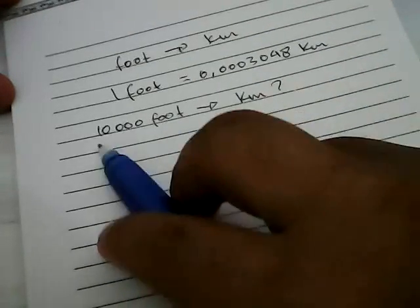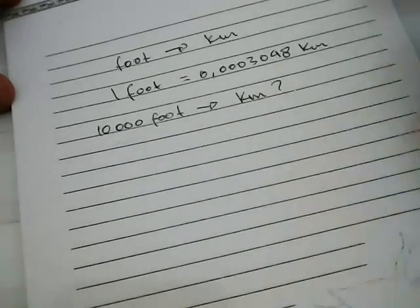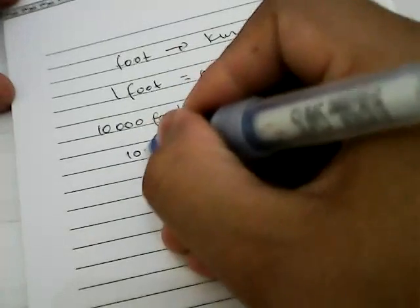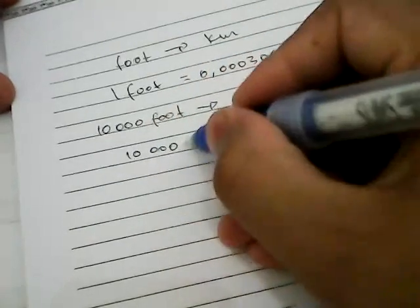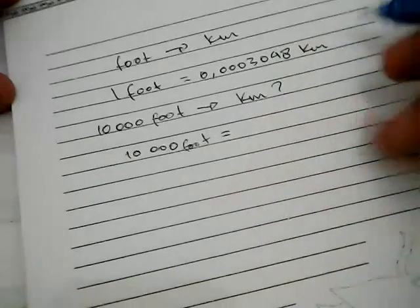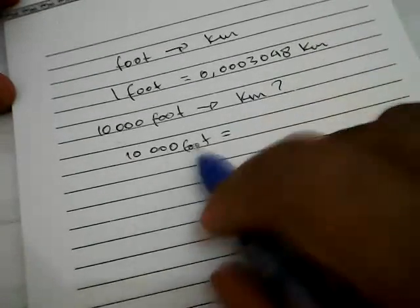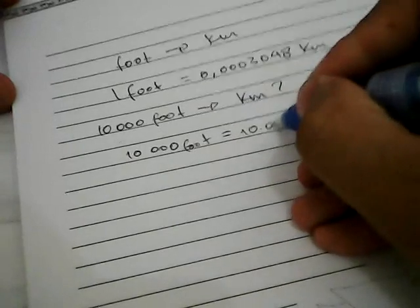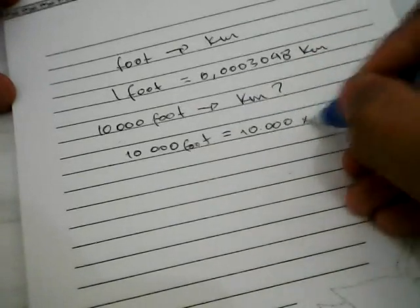You need to write 10,000, then give it an equal sign. Write 10,000 again, and you need to multiply it with 0.0003048 kilometers.